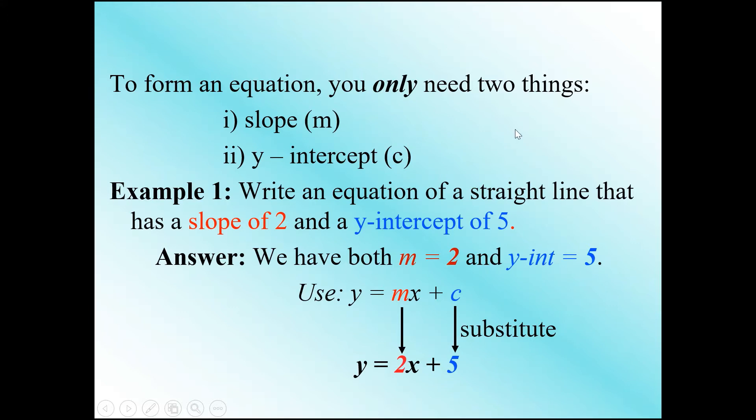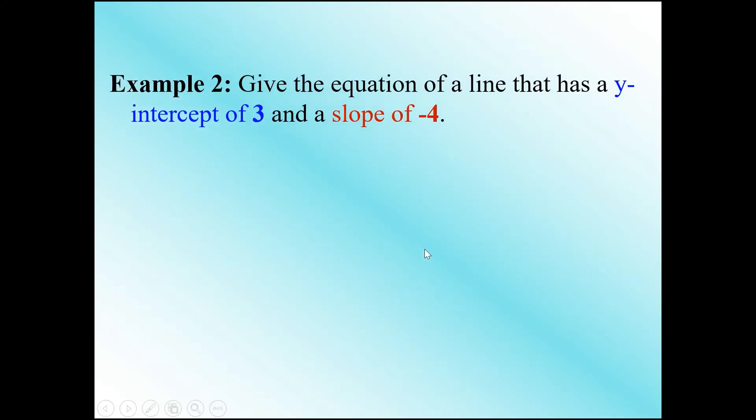Example 2: Give the equation of a straight line that has a y-intercept of 3 and a slope of negative 4. Pause the video and try this yourself.